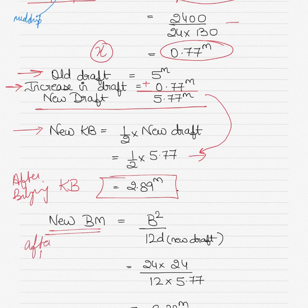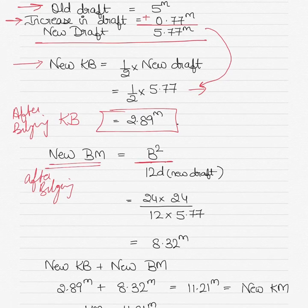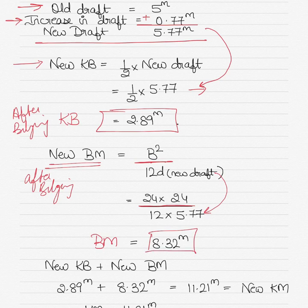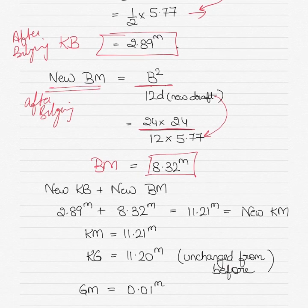Similarly, the new BM after bilging is calculated by the square of the breadth divided by 12 times the new draft. Breadth remains 24, so 24 squared divided by 12 times 5.77, which gives a new BM of 8.32 meters.